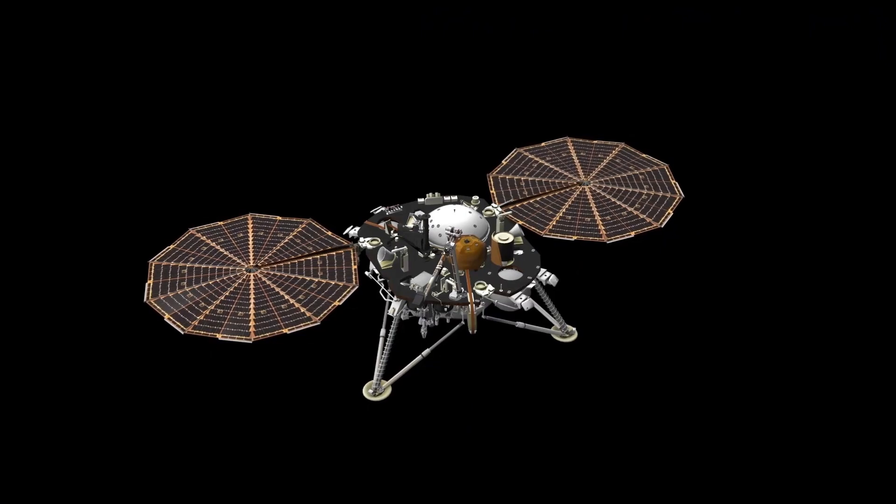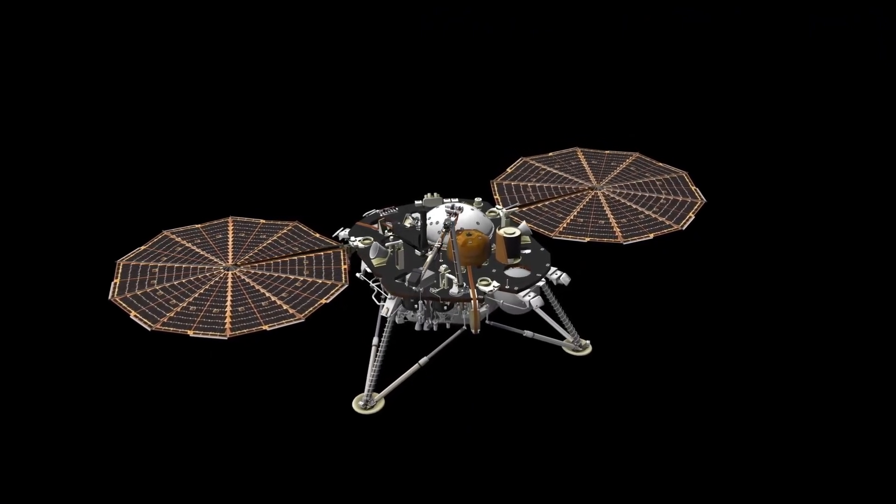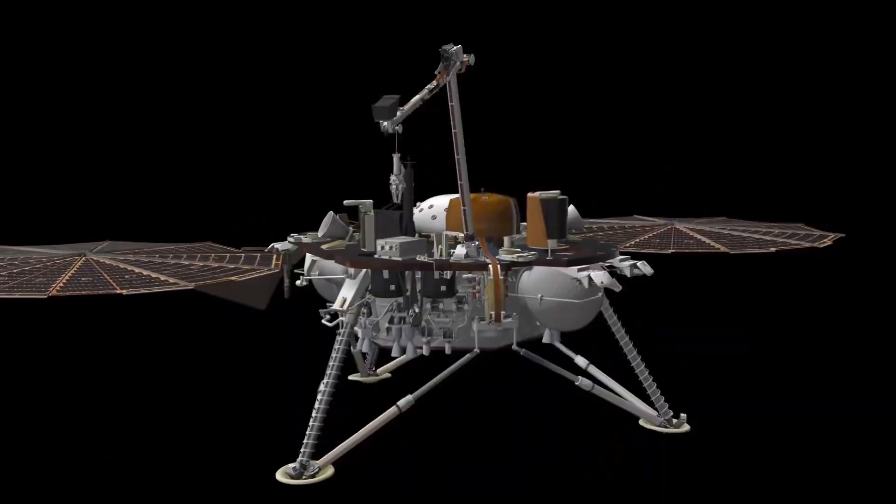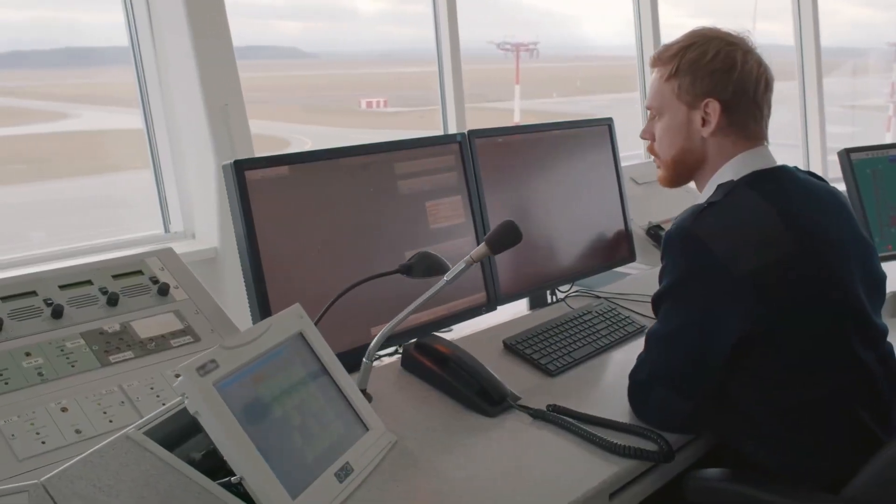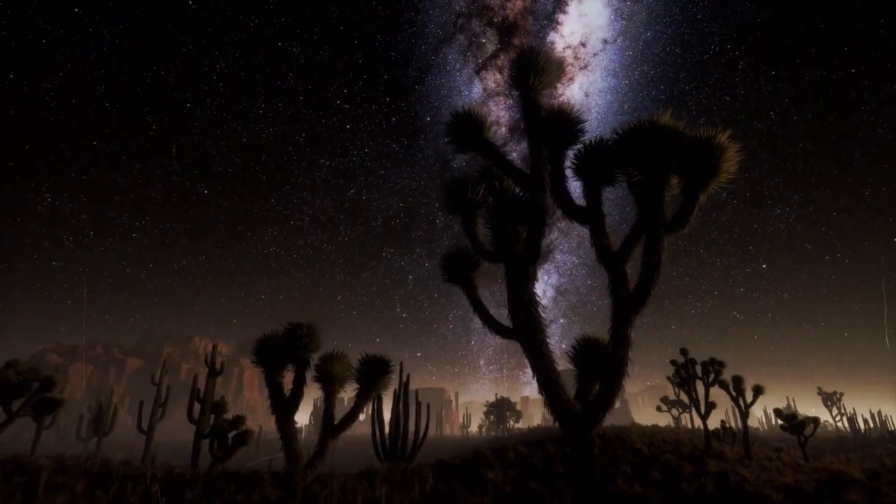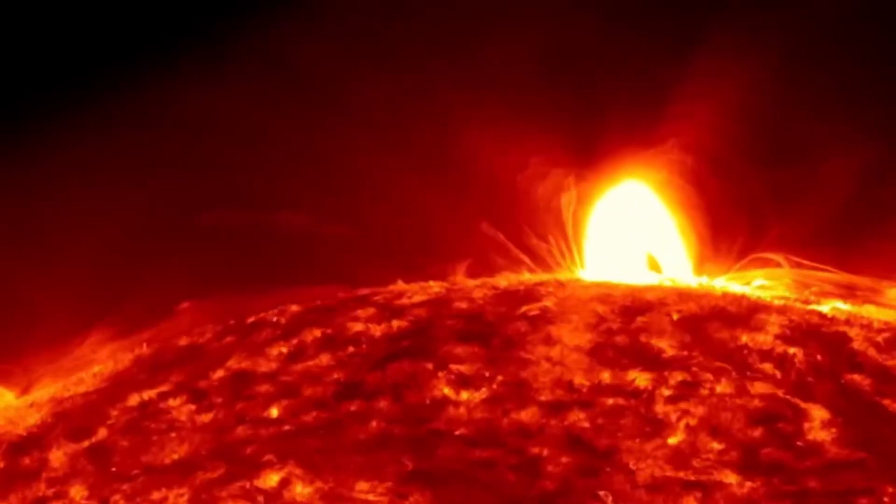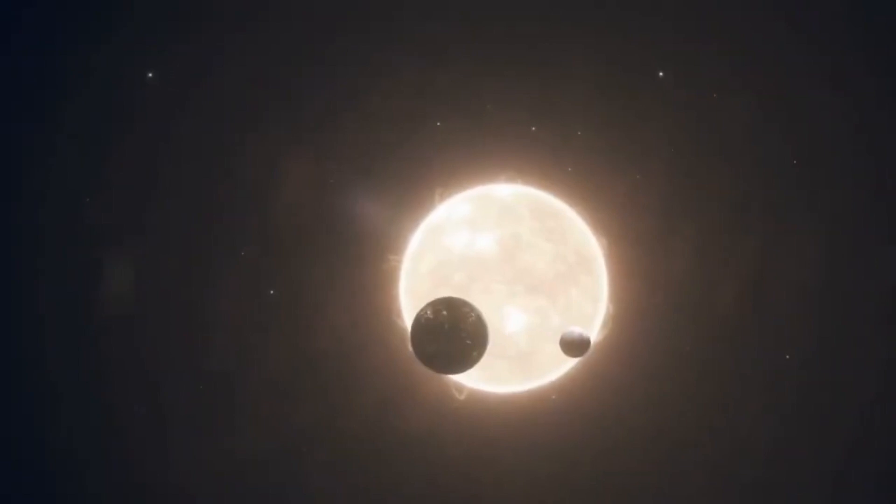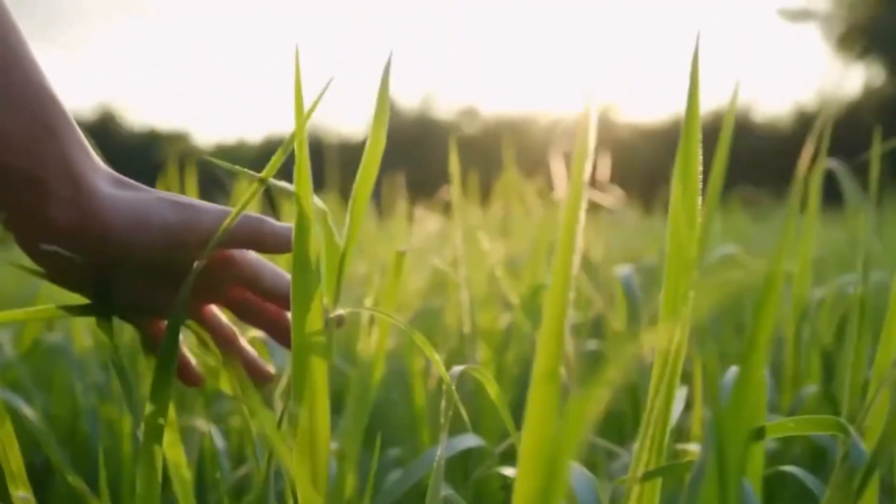In 2021, the time had come. Parker Solar Probe approached the sun to within 13 million kilometers and plunged into its corona multiple times. While the record-breaking flight understandably made international headlines at the time, revealing, among other things, that the surface of the corona is not uniform and smooth but characterized by local peaks and valleys, these were by no means the first findings of the mission.